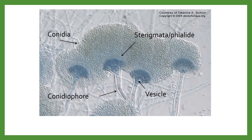Here we have a microscopic examination of Aspergillus with the stain known as lactophenol cotton blue. You can see all the spores — the little circular structures known as conidia — then the sterigmata, which are the little hands that hold the conidia, then the bulbous section called the vesicle, and below that the long tubular structure called the conidiophore.